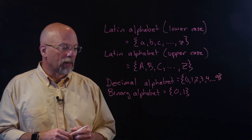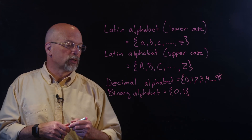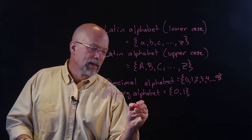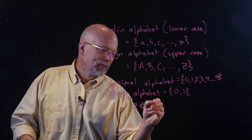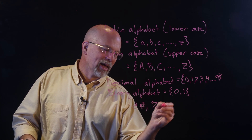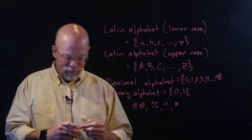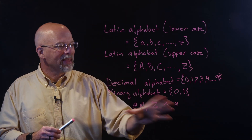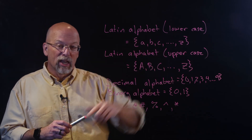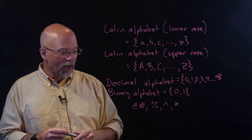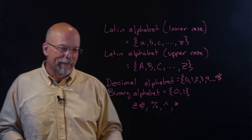This keyboard alphabet also includes things like the at symbol, the pound sign, the percent sign, a caret, asterisk, and so forth. You add this set with the uppercase and lowercase Latin alphabet sets, and you get the keyboard set.